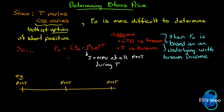We're going to make a couple of assumptions. If we assume that the cheapest to deliver is known — and that's not such a crazy assumption. At any given time, it's easy for most market participants to identify what the cheapest to deliver actually is. The problem is that the cheapest to deliver can change over time: on shorter time periods not so much, but on longer time periods, yes, it can change.